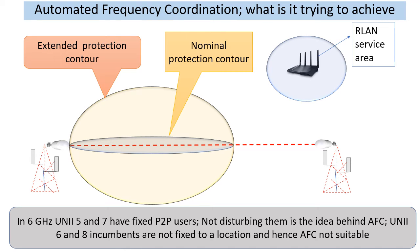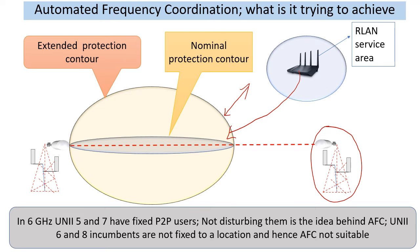What does AFC try to achieve? One of the major incumbents is the point-to-point backhaul systems used by a variety of operators. What they want is protection around a certain area of their communication from any unlicensed band usage. That is in a nutshell what AFC is trying to implement. This is only in certain parts of the 6 gigahertz spectrum, not all of it, because of certain types of users and their details which are known to the FCC to help achieve this objective.